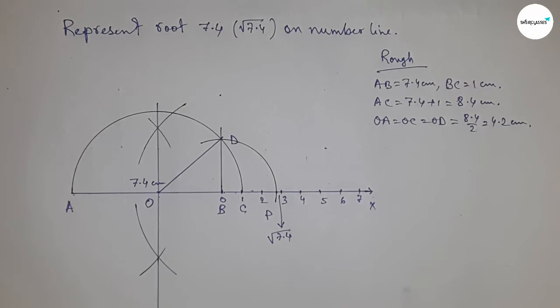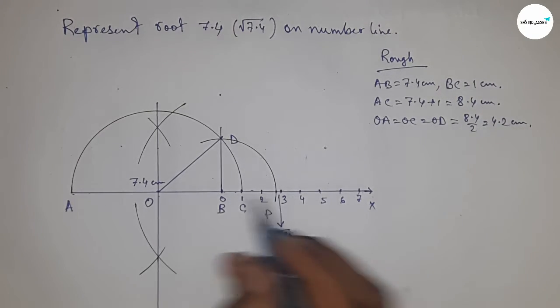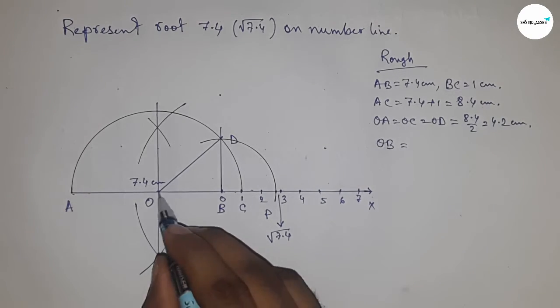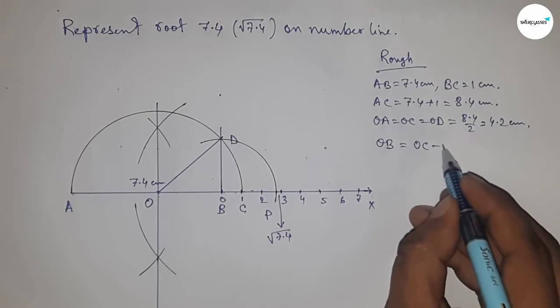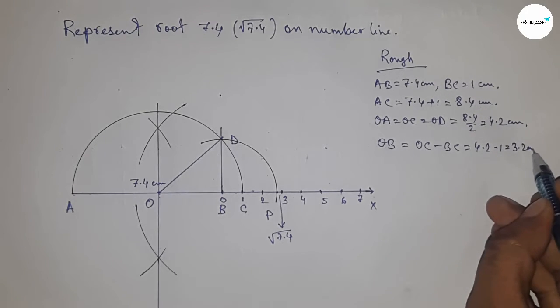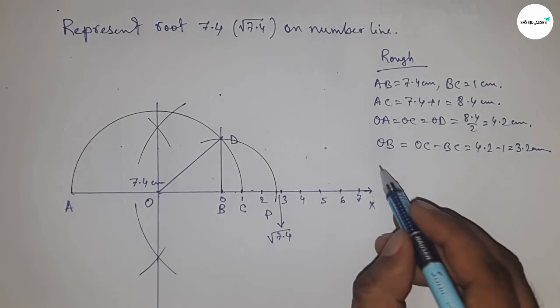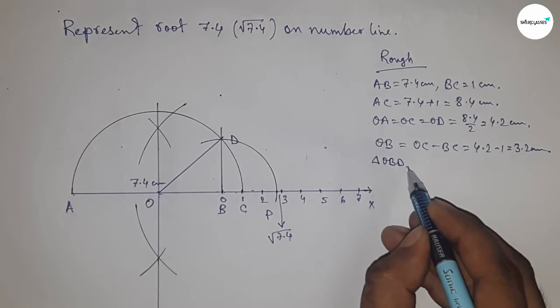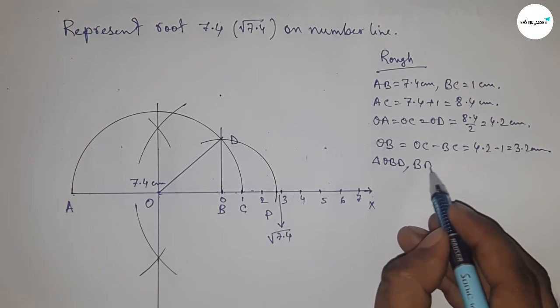Now distance OB equals OC minus BC. Putting the values of OC and BC, this is 3.2 centimeters. From right angle triangle OBD, we can write BD equals root of OD squared minus OB squared by Pythagoras theorem.